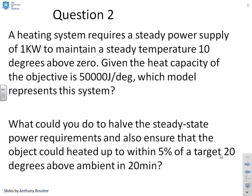Second question. A heating system requires a steady state power supply of 1 kilowatt to maintain a steady temperature 10 degrees above 0 or outside. Given the heat capacity of the object is 50,000 joules per degree which model represents this system? Now having done that we get a new requirement. We want to half the steady state power requirements and also ensure that the object could be heated up to within 5% of target 20 degrees above ambient in 20 minutes. So those are the things that we need.